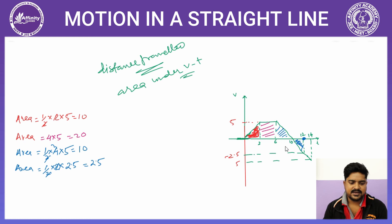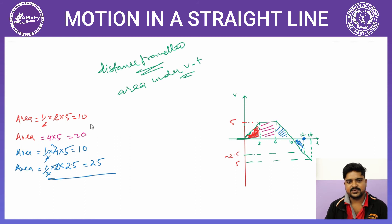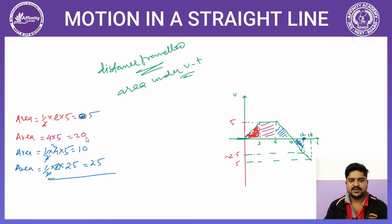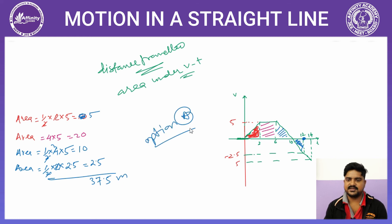12 सेकेंड तक total distance traveled के लिए सारे areas जोड़ देंगे। सॉरी, पहला triangle 5 होगा, 10 नहीं। तो: 5 + 20 + 10 + 2.5 = 37.5 मीटर। तो हमारा answer Option A है।